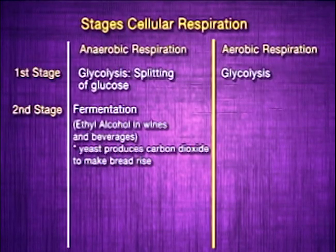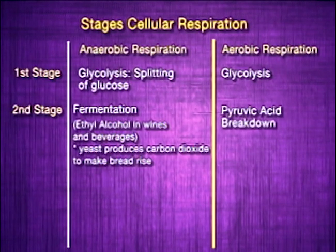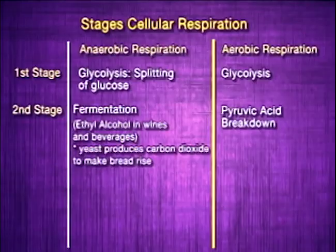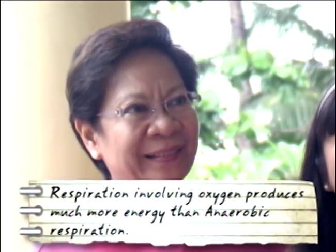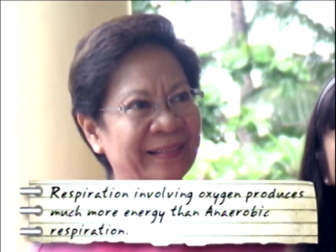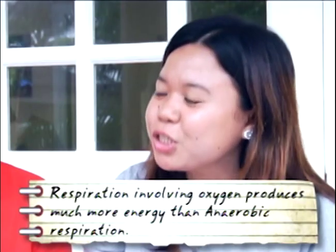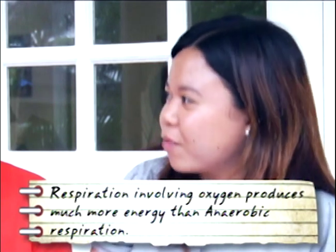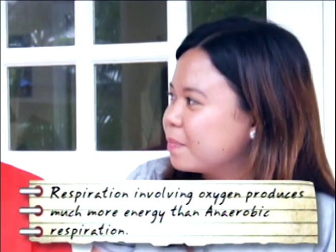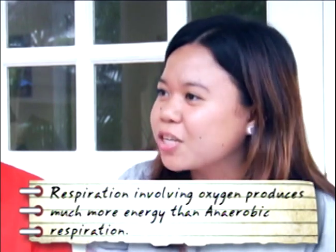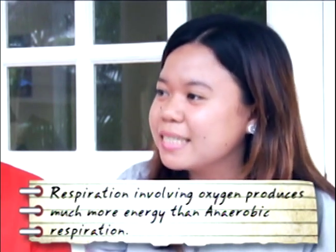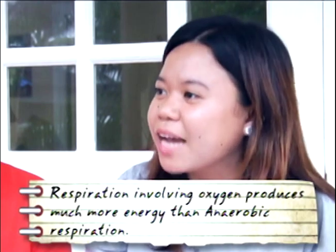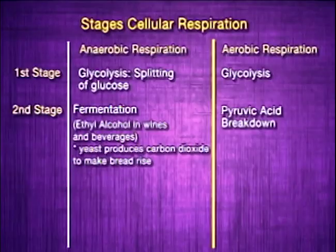This time, we'll proceed with the second stage of aerobic respiration — the pyruvic acid breakdown. As you will see later, respiration involving oxygen produces much more energy than anaerobic respiration. Also, these succeeding steps take place inside the mitochondria of the cell.